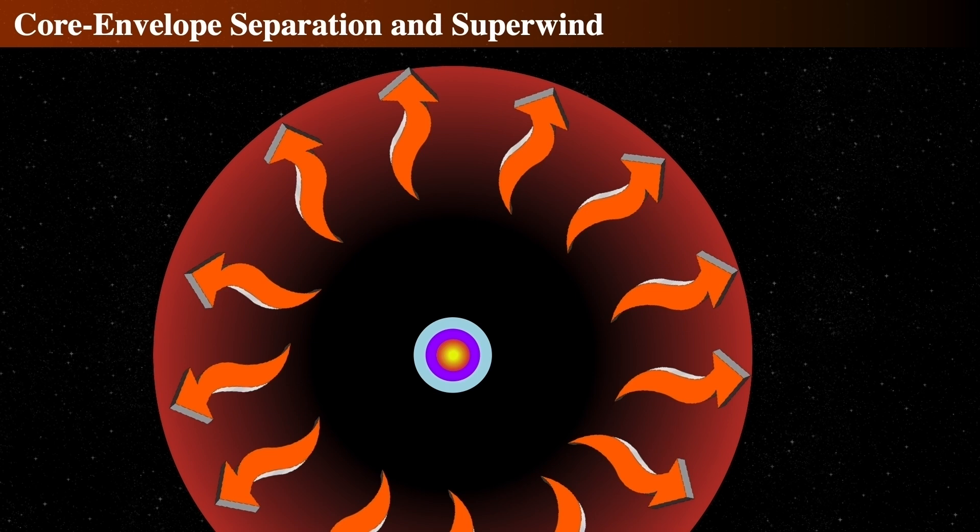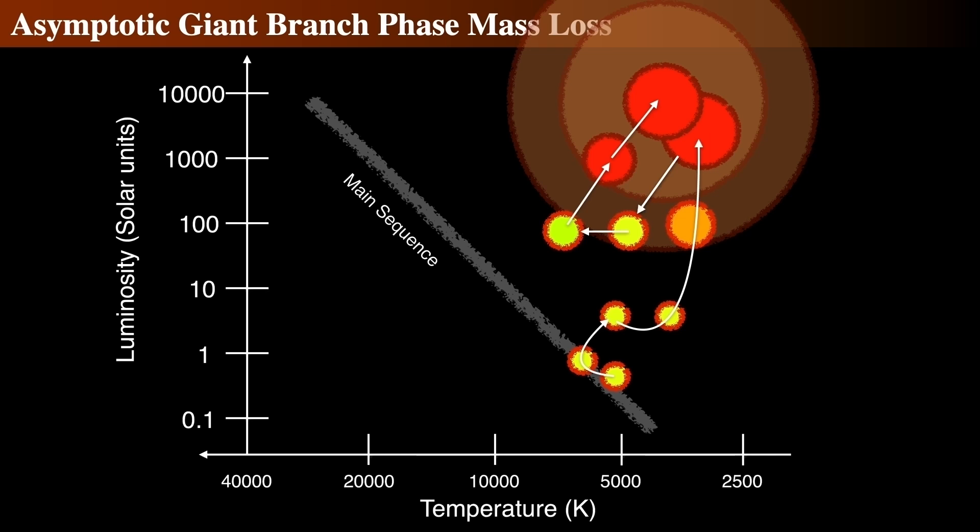For a 5 solar mass star, it'll take somewhere between 10 and 30,000 years to slough off everything above the core. For a star like the Sun, this means that it will lose 60% of its original mass out to space in a superwind.